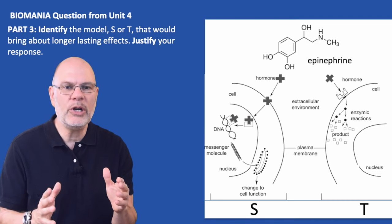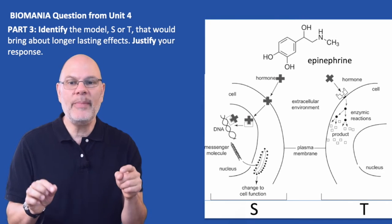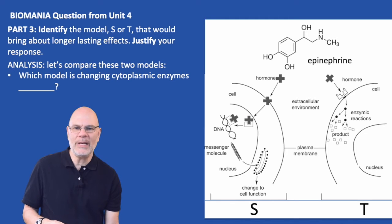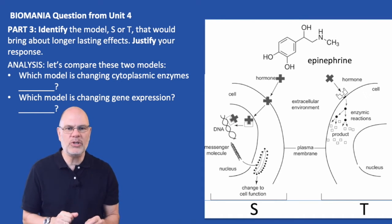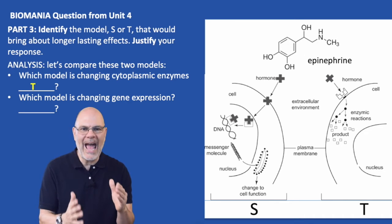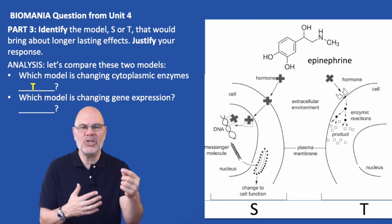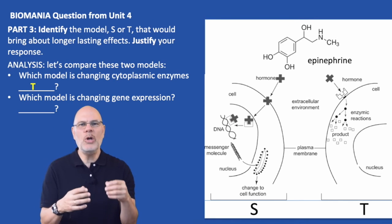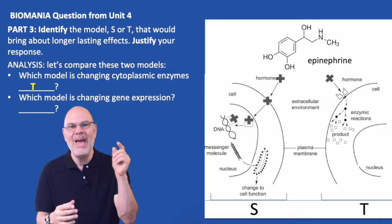Now part three. There are two models here that represent hormone action. Which one, S or T, would bring about longer-lasting effects? Model T is based on changing enzymes that are already present in the cell, ready to be activated. There's probably some second messenger system that's going to activate those enzymes by getting a message that will go from the membrane receptor into the cytoplasm, activating those enzymes, bringing about an effect. Epinephrine is connected to a G-protein-coupled receptor and a second messenger like cyclic AMP that's going to be connected to a signal transduction system, and that's going to cause that effect.